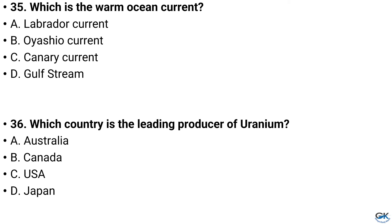Question number 35. Which is the warm ocean current? Option A: Labrador current, Option B: Oyashio current, Option C: Canary current, Option D: Gulf Stream. And the answer is Option D: Gulf Stream.